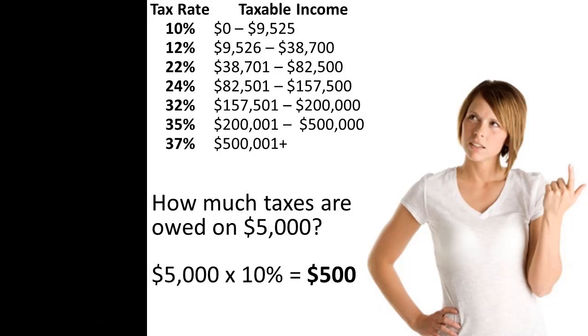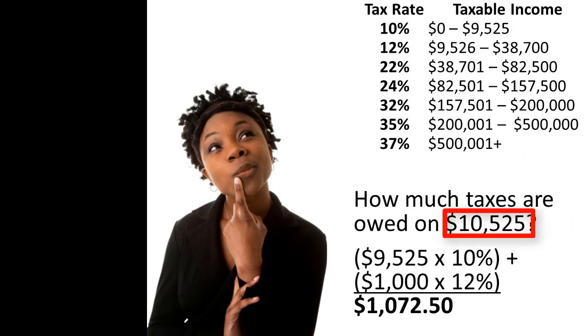However, beyond this lowest bracket of taxable income, calculating taxes owed becomes a bit more complicated. For example, if a single taxpayer had $10,525 of taxable income in 2018, then the first $9,525 would be taxed at 10%, and the remaining $1,000 would be taxed at 12%. It is incorrect to simply use the 12% rate for all of the taxpayer's taxable income. In other words, do not simply multiply the total $10,525 of income by 12%. The 12% rate is the marginal tax rate because it is the rate charged for the next dollar that the taxpayer earns, but the 12% rate does not apply to every dollar the taxpayer earns.